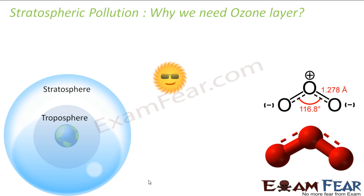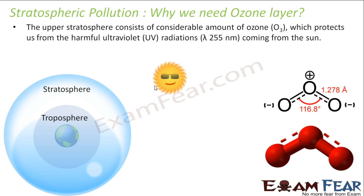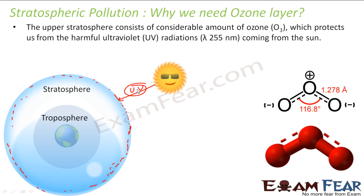The first question is: why do we need the ozone layer? Ozone consists of three oxygen atoms with resonance — this is the structure of ozone. Ozone protects us from harmful UV rays of the sun. There is an ozone layer in the stratosphere, and this ozone layer reflects UV rays back. Ozone is not good in the troposphere layer, but it is very important in the stratosphere layer.